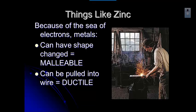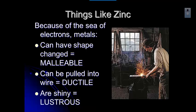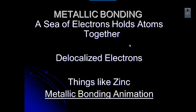Metals can also be pulled into wire — that's called ductile. They're also shiny, which we say is lustrous. That shininess has to do with those electrons moving around in the orbitals. Think back to Unit 3 when we talked about spectroscopy — electrons moving around in their orbitals give off some visible light, and that's what makes those elements shiny. With metallic bonding, you've got that sea of electrons holding the atoms together, and those electrons are delocalized, moving around from ion to ion.